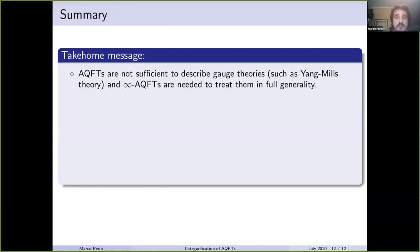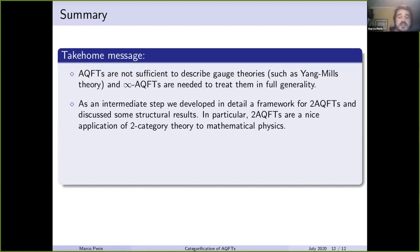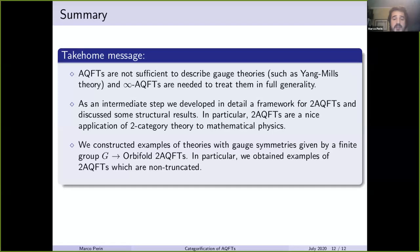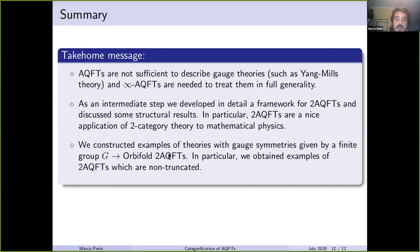So I'm done. The take-home message is that one-AQFTs are not sufficient to describe gauge theories and one would need infinity-AQFTs to treat them in full generality. As an intermediate step, we developed a framework for two-AQFTs and discussed some simple results. Two-AQFTs are a nice place to start as an application of two-category theory to mathematical physics. We also constructed examples of theories with gauge symmetries given by a finite group G via the orbifold construction, obtaining easy examples of two-AQFTs which are non-truncated. Thank you for your attention.